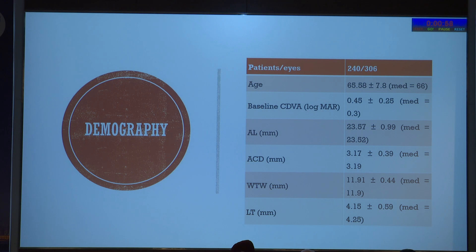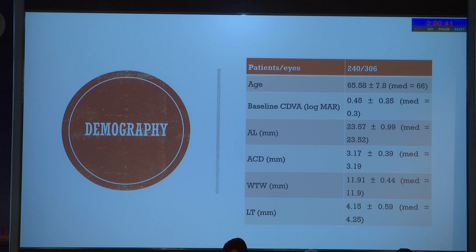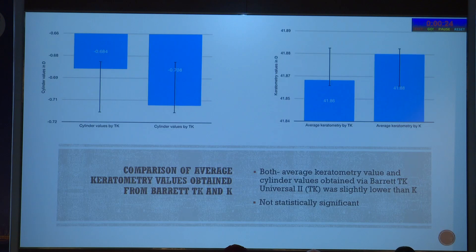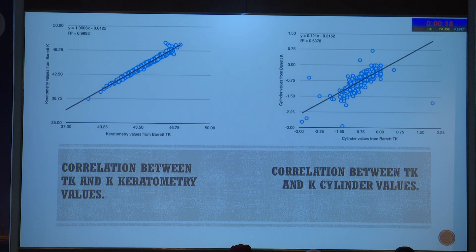Data was entered in MS Excel and analysis was done using SPSS 21 software. Descriptive statistics were used for variables in the form of mean and standard deviation. Quantitative variables and proportions were measured using box charts and plots for categorical variables. Normal distribution was tested by histogram and Kolmogorov-Smirnov test, and quantitative comparisons used t-test for parametric data and Mann-Whitney U test for non-parametric data. A two-tailed P significant value of 0.05 was used. Keratometry values for both TK and K were lower, though not significant.